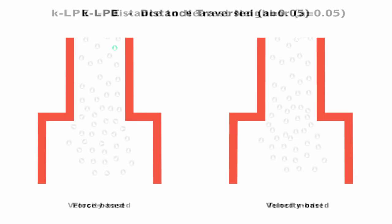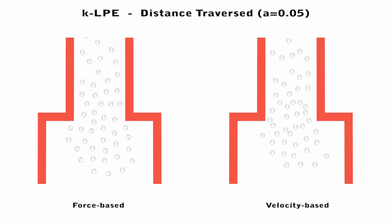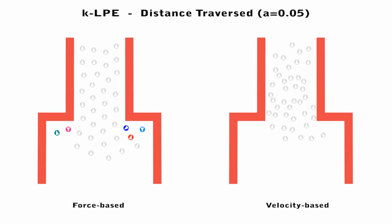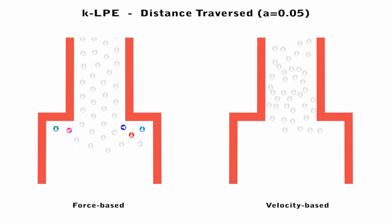According to other similarity metrics, such as distance traversed, the velocity-based method has little to no outlying behavior.